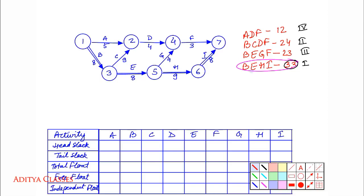Let us start with our forward pass and backward pass of the first path. We will make it a quick one this time. BEHI: If I start at 0, 0 plus 8 gives me 8. 8 plus 8 gives 16. 16 plus 9 gives 25, and 25 plus 8 gives 33. This is my forward pass. Then the backward pass: 33 minus 8 is 25. To finish H by 25, I have to start H by 16. To finish E by 16, start by 8. And B by 0. So this was forward and backward pass on our critical path BEHI.